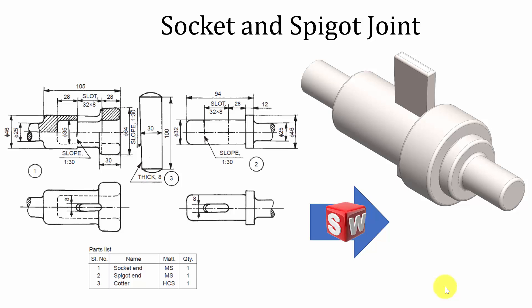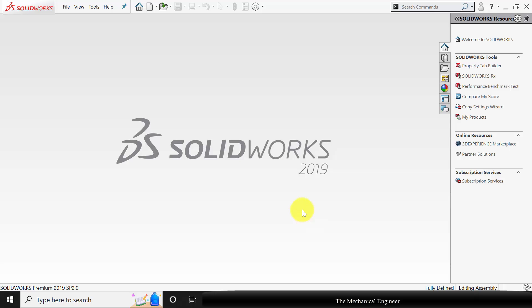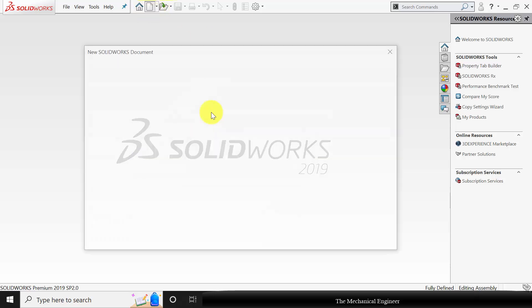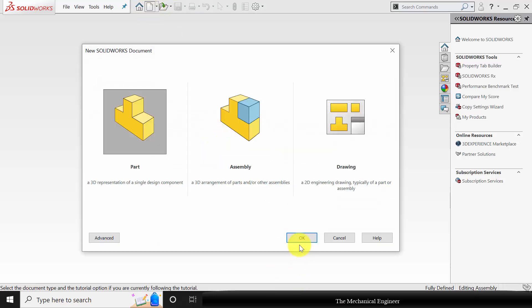Hello all, welcome to the SOLIDWORKS tutorial. In this tutorial I am going to show you how to model the parts and assembly of socket and spigot joint. Open SOLIDWORKS, click New and create a new part.